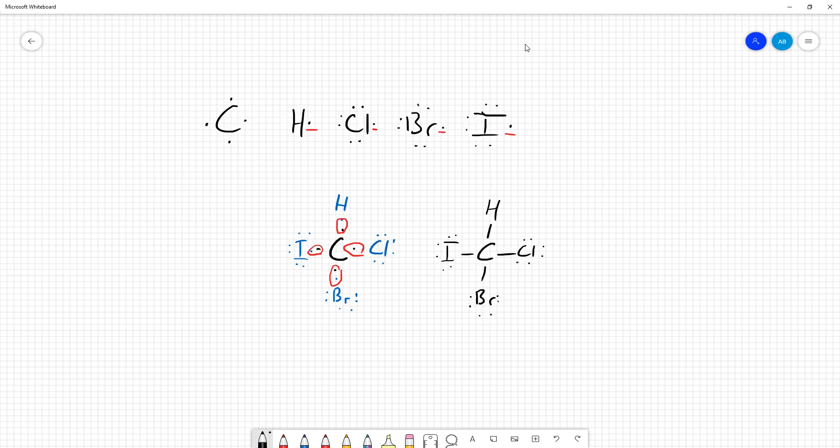Now if you analyze this, chlorine, bromine, iodine, and carbon each follow the octet rule, where they have eight electrons, either in lone pairs surrounding it or being shared with another atom.